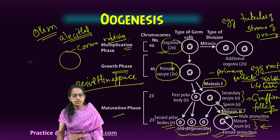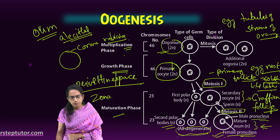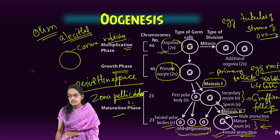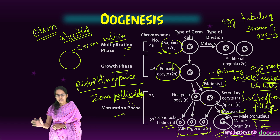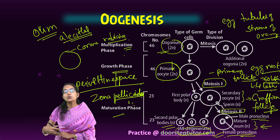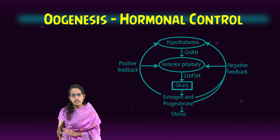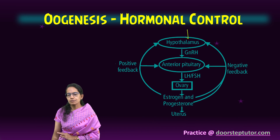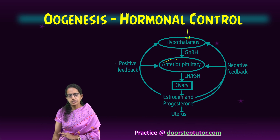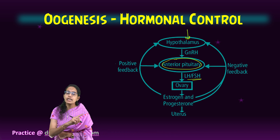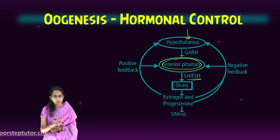The next layer is the zona pellucida, which is the non-cellular inner portion that provides nutrition to the egg. Oogenesis is initiated by growth hormones from the hypothalamus. The signal goes to the anterior pituitary, which releases LH and FSH, similar to spermatogenesis. FSH leads to the secretion of estrogen, while LH leads to the secretion of progesterone.